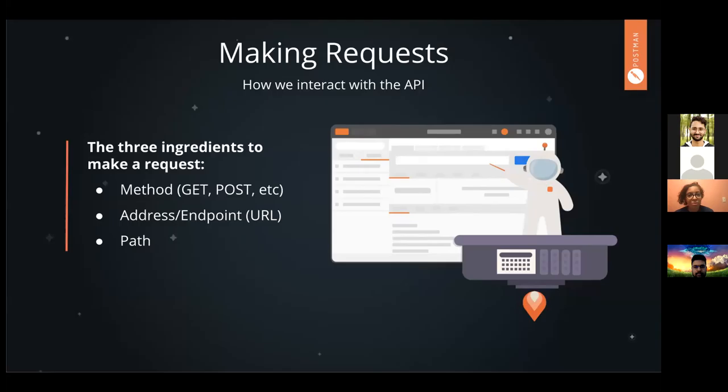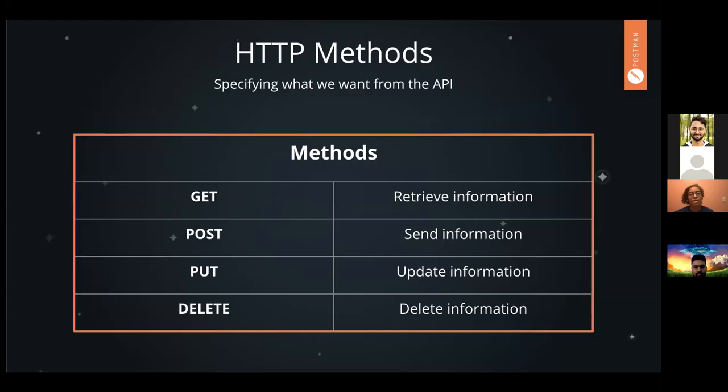HTTP methods specify what we want from the API. The four that you're going to come across the most are: GET, which is how we get information; POST, which is how we send information; PUT, which is how we update information; and DELETE, which is how we delete information. Luckily, these are all very straightforward with their naming conventions.